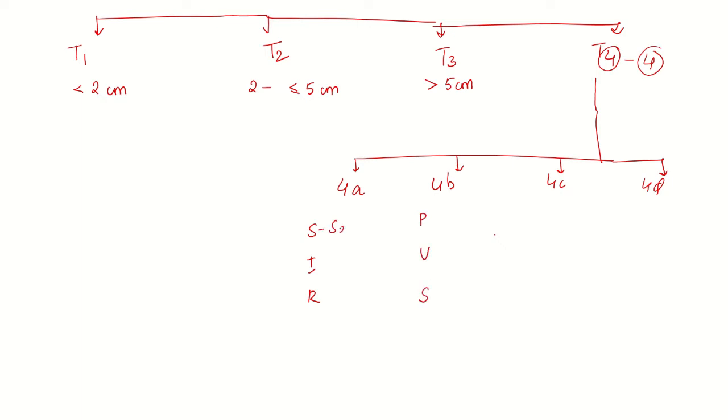SIR: S stands for serratus anterior, I for intercostal muscles, and R stands for ribs. This does not include pectoralis major. 4a is involvement of chest wall but this does not include pectoralis major. This is the important point to remember.